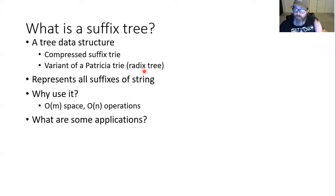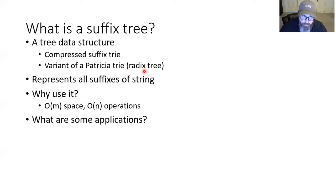Ukkonen's Algorithm is a method to construct a suffix tree, but first we need to know what a suffix tree is and what it can do. It's a type of tree data structure — basically a compressed suffix trie, and it's a variant of a Patricia trie, which is a type of radix tree. It's important because it represents all the suffixes of a given string.